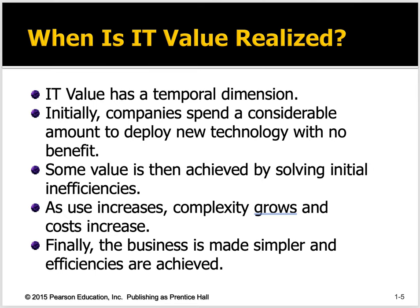So when is this value realized? It has a temporal dimension — there's time involved. You don't implement the software and immediately get your result, because if the software is complicated it requires a lot of time to implement. Companies spend a considerable amount of time deploying the technology with no benefit. In fact, there's usually a cash drain, especially if you're implementing an ERP system like SAP or Oracle. Some value is achieved by solving initial inefficiencies — the low-hanging fruit. As use increases, complexity grows, and sometimes costs increase.